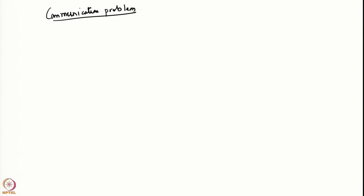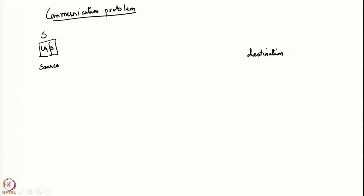In point-to-point communication, you have information at what is called the source. You have some information at a source and what we want to do is we want to replicate this information at a destination. The information at the source would be denoted by a random variable s.